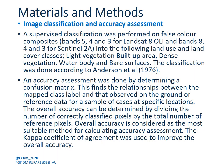For image classification, a supervised classification was performed on false color composites — bands 5, 4, and 3 for Landsat-8, and bands 8, 4, and 3 for Sentinel-2 — into the following land use and land cover classes: light vegetation, built-up area, dense vegetation, water body, and bare surface, using the Anderson 1976 classification scheme.